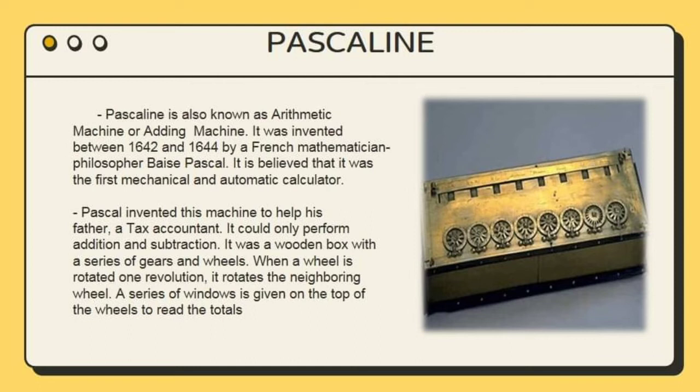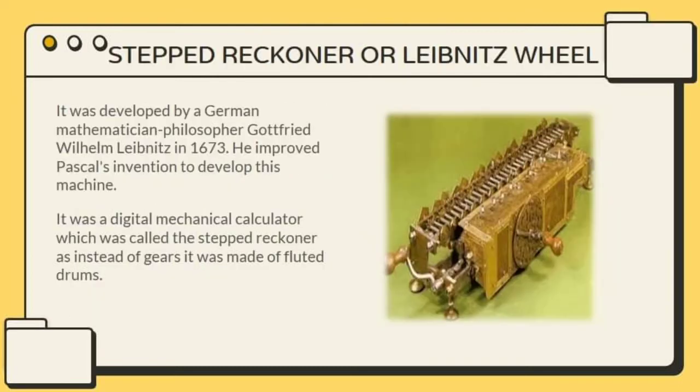It was a wooden box with a series of gears and wheels. When a wheel is rotated one revolution, it rotates the neighboring wheel. A series of windows is given on the top of the wheel to read the totals.